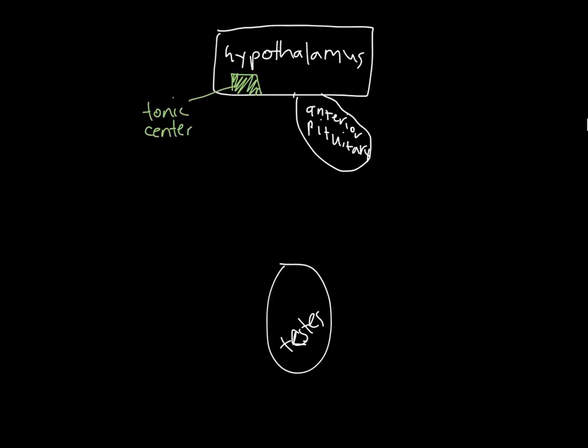The gonadotropin-releasing hormone, or GnRH, is produced from the hypothalamus tonic center and targets the anterior pituitary, which, in response, then releases LH and FSH, which go target the testes, which, in response, produces our sex steroids, in this case testosterone and estradiol.